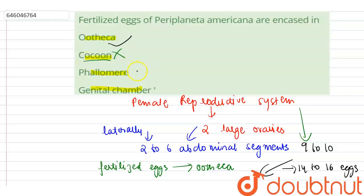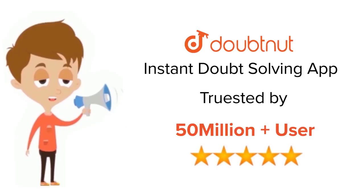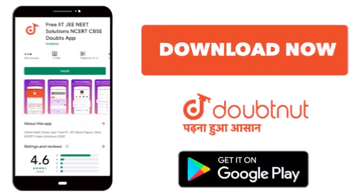Phallomere and genital chamber are incorrect options because fertilized eggs of cockroach are not encased in phallomere or genital chamber. So the correct option is ootheca. Thank you. For class 6th to 12th, IIT-JEE and NEET level, trusted by more than five crore students, download Doubtnet today.